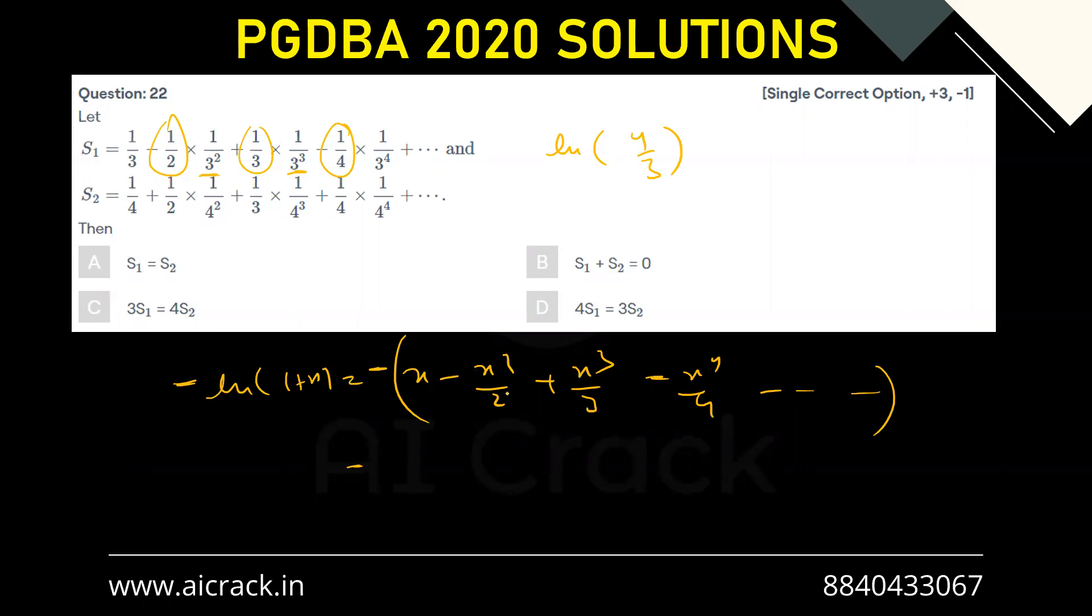And if I replace x with -1/4 over here, that would do my work. That would give me ln(1 - 1/4) equals to minus times...